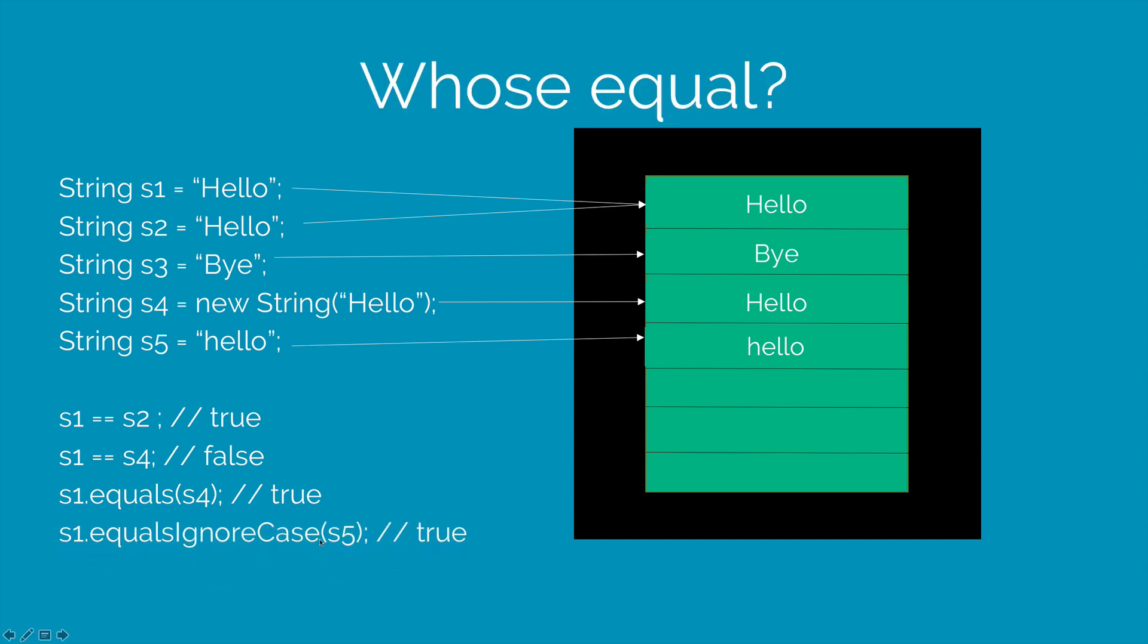So s1.equalsIgnoreCase s5. Notice that s5 is a hello with a small h and s1 is a hello with a capital H. They are still equal because ignoreCase will ignore the alphabetical differences between the two. And s1.equals s3 will return false because s3 simply has bye in its contents and s1 says hello, and obviously they are not equal.